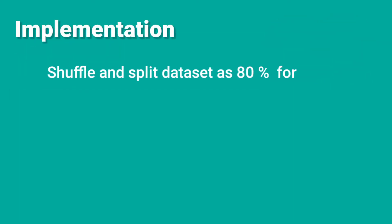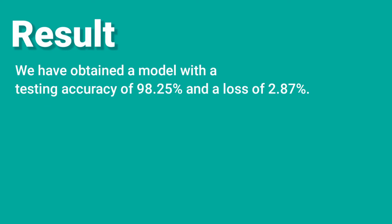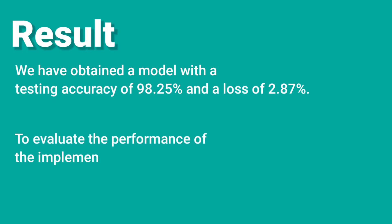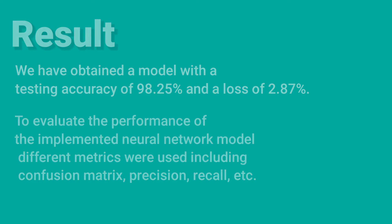The implementation involved shuffling and splitting the dataset as 80% for training, 10% for validation, and 10% for testing. The results obtained show a model with a testing accuracy of 98.25% and a loss of 2.87%. To evaluate the performance of the implemented neural network model, different metrics were used including confusion matrix, precision, recall, and others.